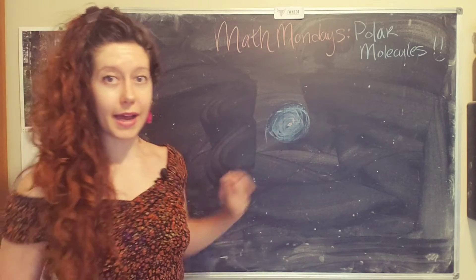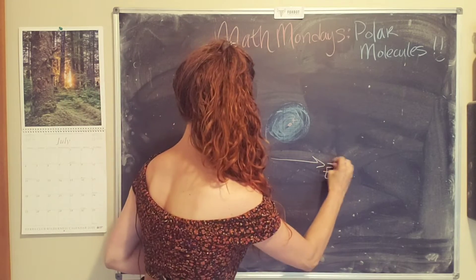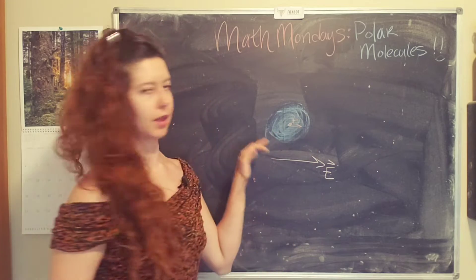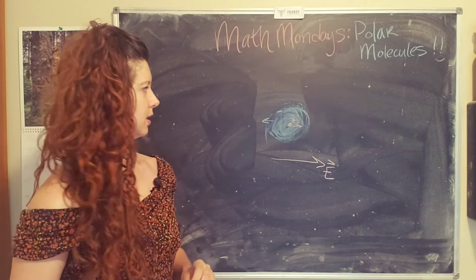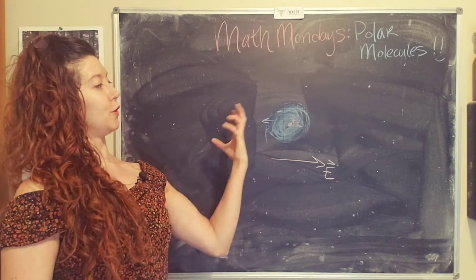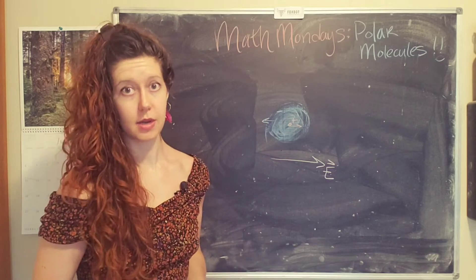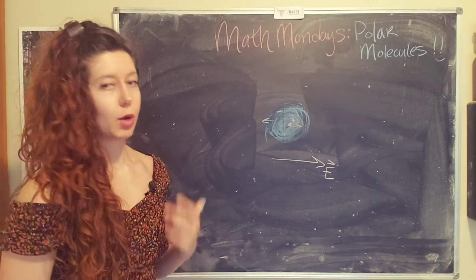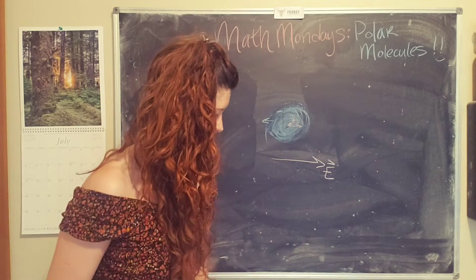So we have our neutral atom here and let's say we apply an external electric field, which is going to be purple this time. The positively charged nucleus will feel a force in the direction of the electric field, and the negatively charged electron cloud will feel a force in the opposite direction. The whole cloud will feel a force that way, and what happens is you end up with a separation of the positive and negative charges, also called a dipole moment. So now this is an induced dipole moment. It was caused or induced by the electric field that we applied.